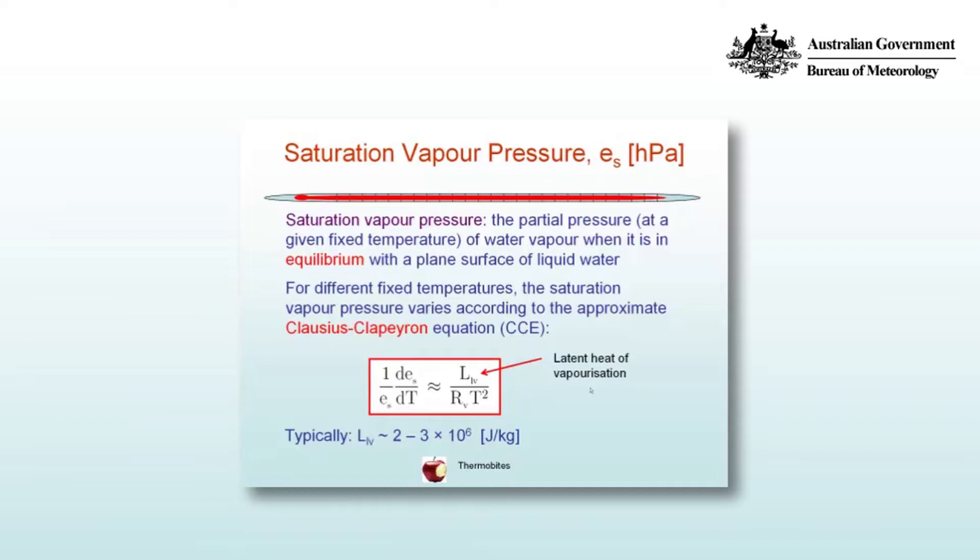For different fixed temperatures, the saturation vapour pressure varies according to the approximate Clausius-Clapeyron equation. One on ES times dES/dT, the rate of change of the saturation vapour pressure with temperature, is approximately equal to L_LV, the latent heat of vaporization, divided by Rv, the specific gas constant for vapour, times T squared.